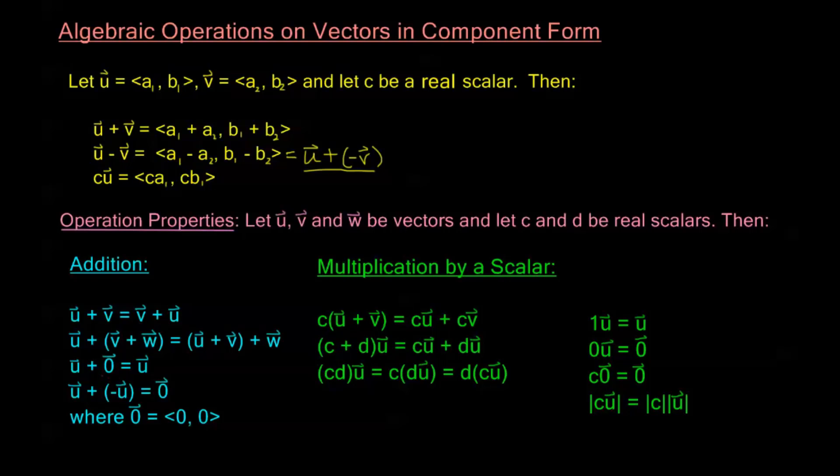But let's go ahead and take a look at what happens when we incorporate zero into our operations. The vector u plus the zero vector is just equal to the vector u. This makes sense because I'm adding the components of u to zero by my addition formula. u plus negative u gives me the zero vector, also very intuitive from our subtraction formula.